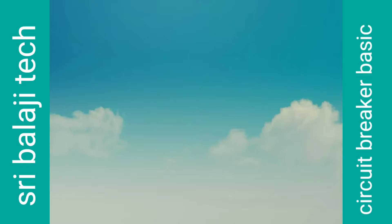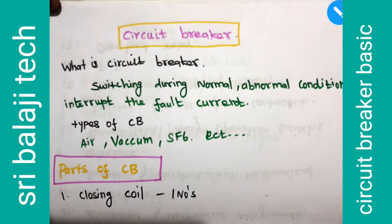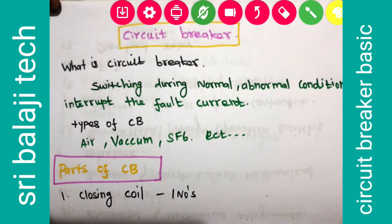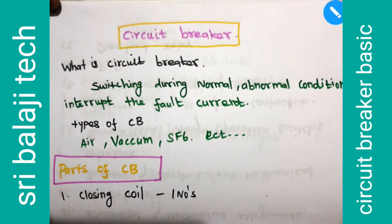We are going to talk about a circuit breaker. Suppose we are going to have abnormal conditions — we are going to take a trip. That is the function. The main important component is a circuit breaker. The circuit breaker is connected to a transformer.